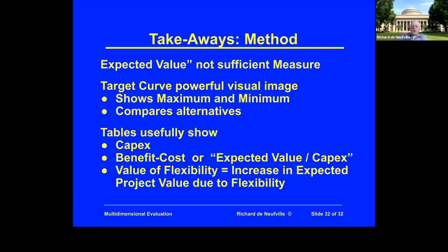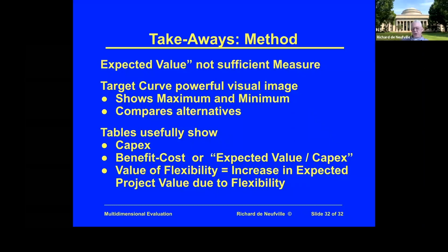So, what is the takeaway for the method? Expected value is not a sufficient measure. I've said this before, but I want to emphasize it, although we've used it a lot as a way to get into the material of dealing with uncertainty in an initial way. We want to think about it in more subtle ways — consider the maximum and the minimum that happens, and be able to compare alternatives. Things like capital expenditures, benefit-cost, and value of flexibility require different ways to think about valuation of a system design over its main dimensions, which is not at all obvious.